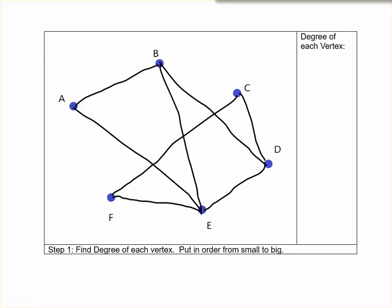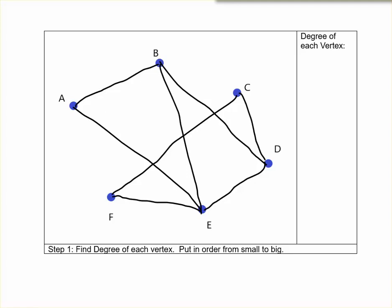Now that we have our vertex-edge graph let's do the steps for coloring. Our first step is to find the degree of each vertex. Remember the degree is the number of edges at each point.